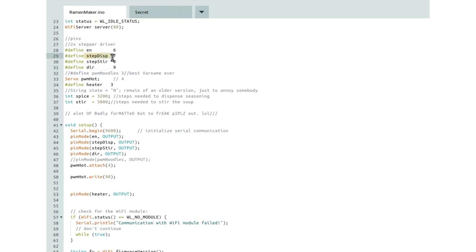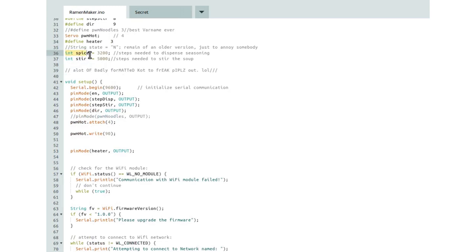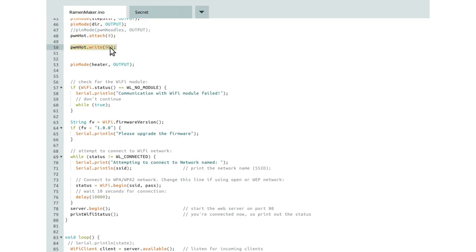We start the Wi-Fi server and we declare some pins. We have two stepper drivers in this example, but we only need one enable pin and one direction pin for both stepper drivers. Only the step pins are individual. Then we are defining the PWM pins. In this case, we are connecting a servo to a known PWM capable pin. And we also define a pin for the heat that only needs to be a digital output. We also declare these variables spice and stir the amount of steps we have to take for a full revolution to dispense all the spice we need. And also to stir the noodles around. We give it 5000 steps to accomplish that. We could just increase these if we need to, but they work fine for now. Then we have our void setup loop.